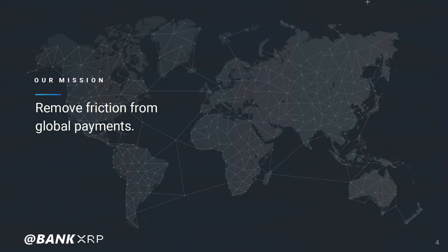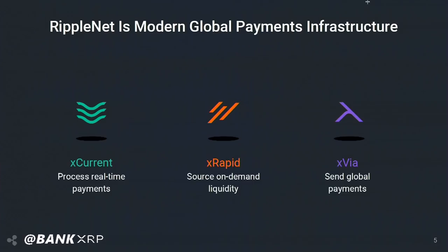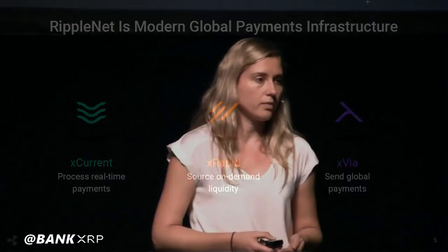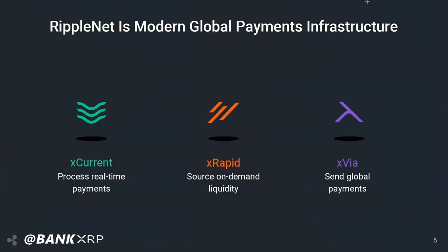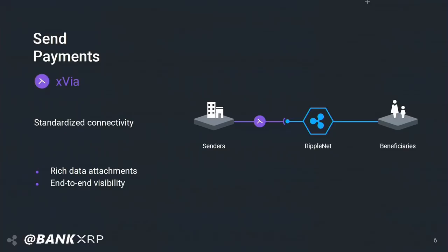It's a two-part solution: software and the digital asset XRP. At Ripple, we are building RippleNet, a modern global payment network infrastructure that allows financial institutions to meet the demands of their customers. Those demands are constantly changing — what corporates wanted from payments in the 1970s is very different from what they want today. We sell three products to financial institutions: XCurrent, which allows them to process real-time payments; XRapid, the product I work on, which allows them to source liquidity on demand; and XVIA, which provides a standard interface for our customers to send money globally.